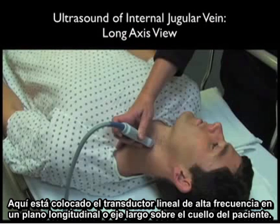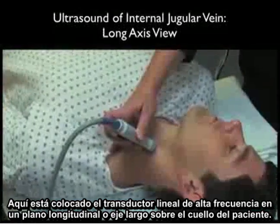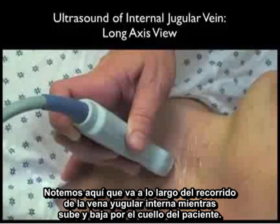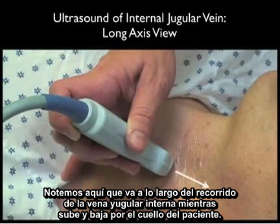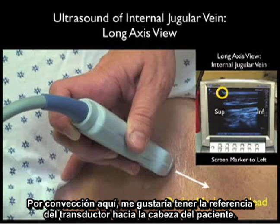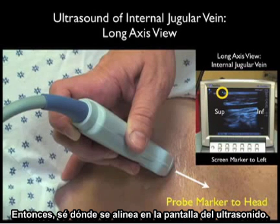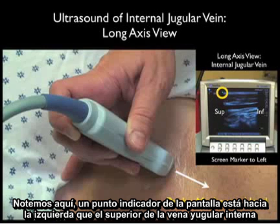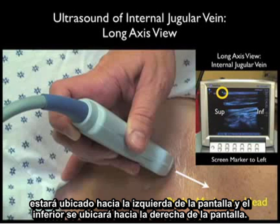Here's the high frequency probe placed in a longitudinal or long axis manner on the patient's neck, running along the course of the internal jugular vein as it runs up and down the neck. By convention, I like to have the probe marker towards the patient's head. Notice that as the screen indicator dot is towards the left, superior on the internal jugular vein will be located towards the left of the screen and inferior towards the right.